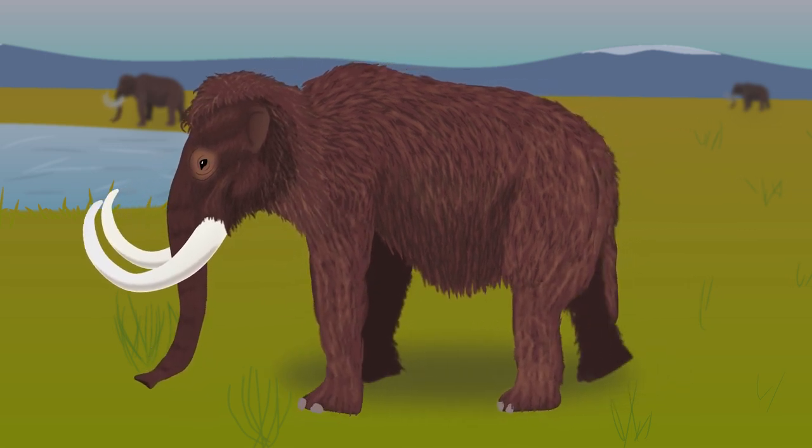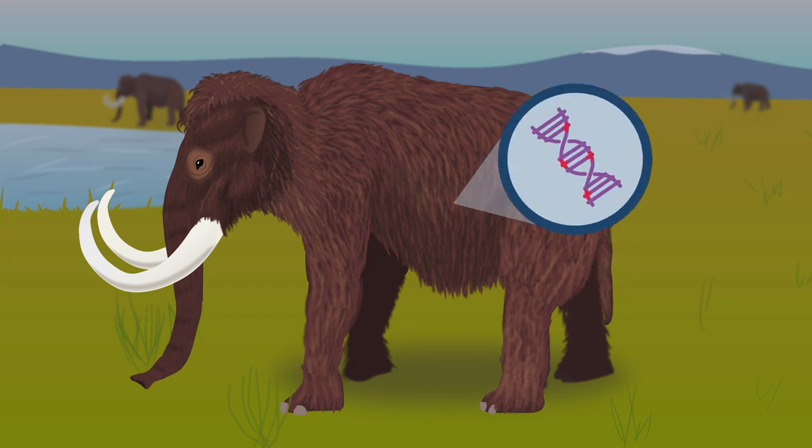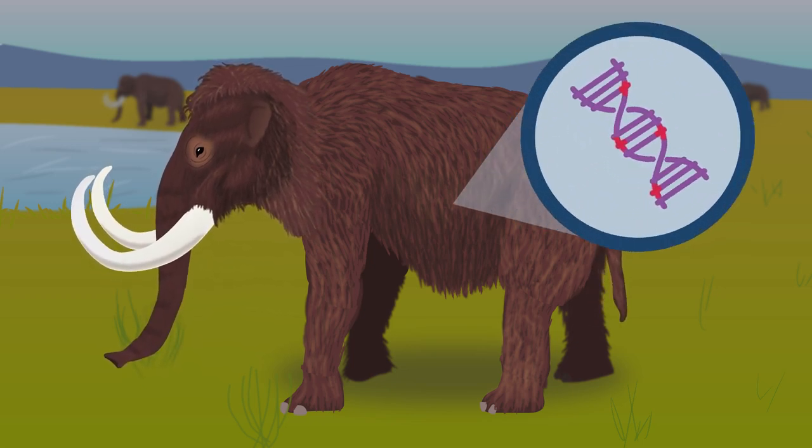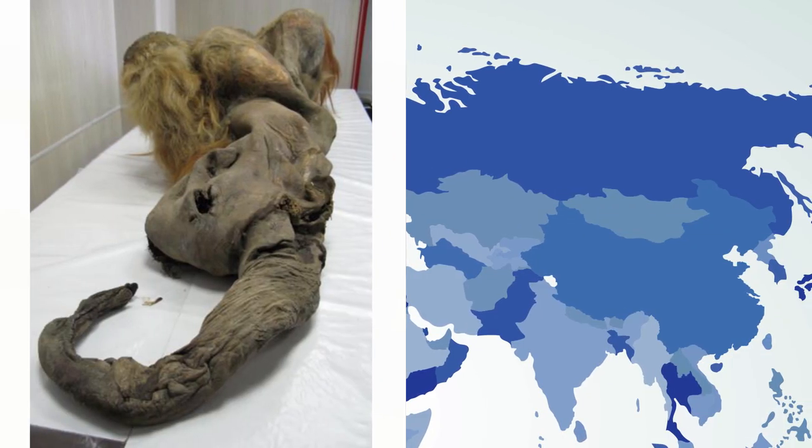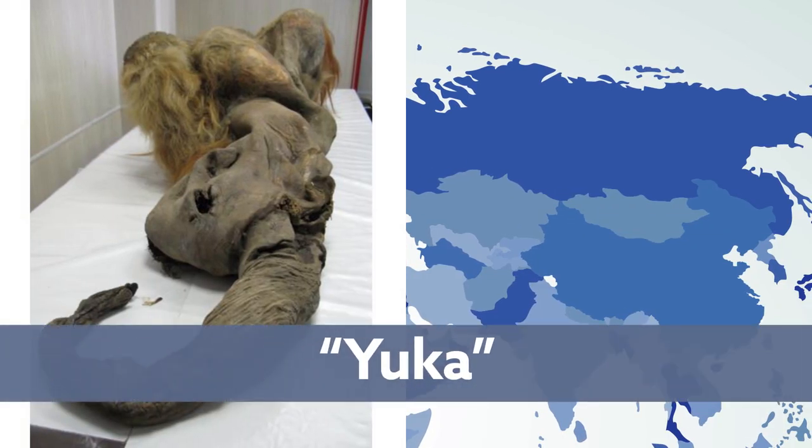The team's findings offer researchers hope that ancient DNA, though damaged, could one day be made functional. The research team salvaged the nuclei from the muscle of Yuga, a young woolly mammoth well-preserved in Siberian permafrost since the last Ice Age.